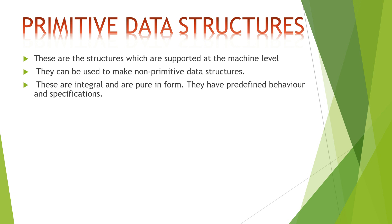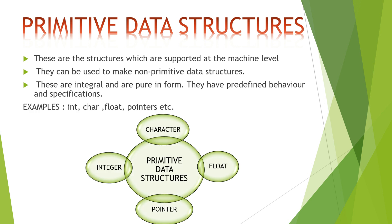Primitive data structures are integral and are also in pure form. They have predefined behavior and specifications. Examples include integers, float, character, pointers, etc. We have studied these in our earlier presentation and call them primitive data types. These have a single memory location which can hold the value only.